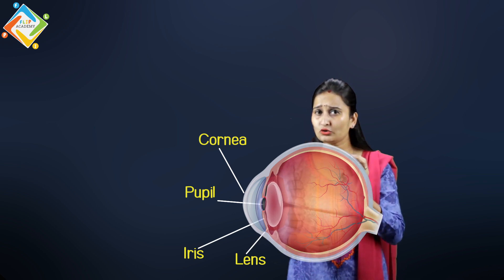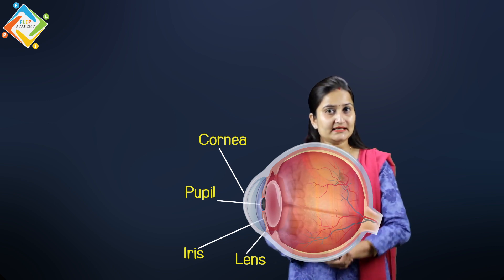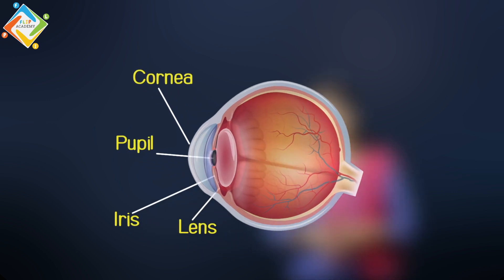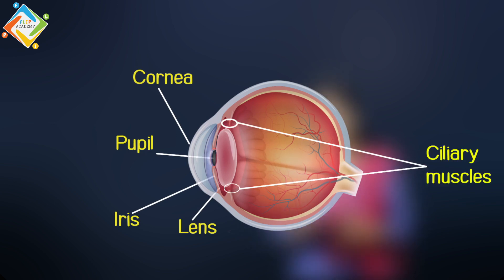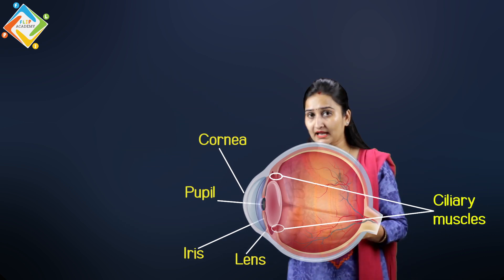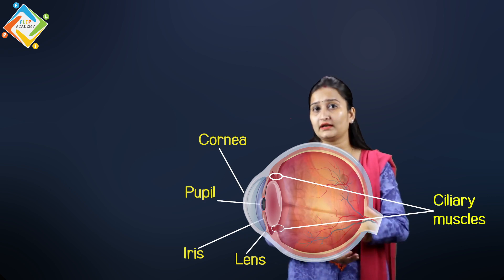This contraction and expansion of the eye lens is done by the ciliary muscles. If you look just above and below the eye lens, there are two muscles visible — a slightly extended portion — and these are called the ciliary muscles. The ciliary muscles hold the eye lens and maintain its position.